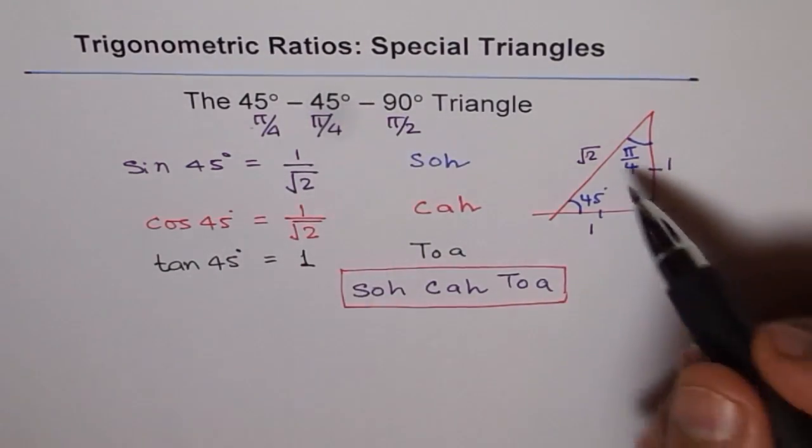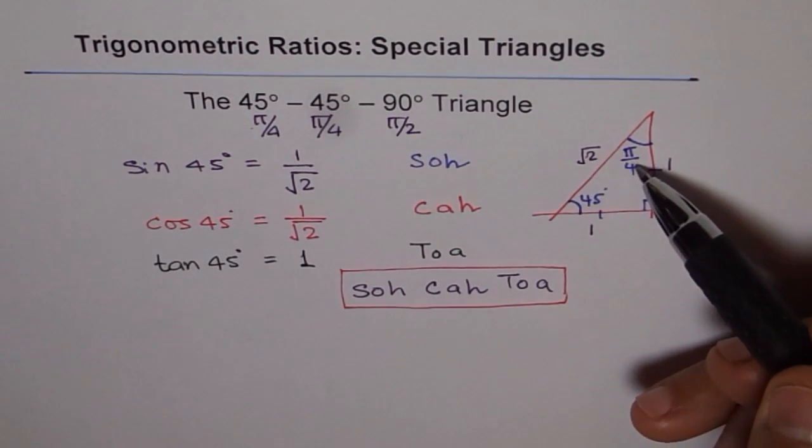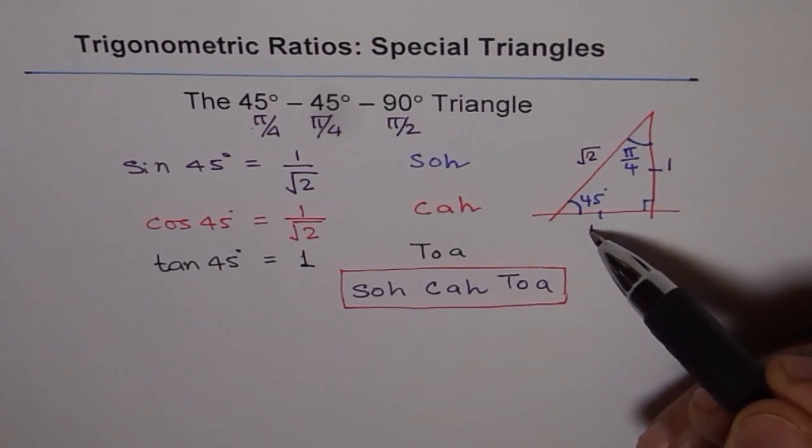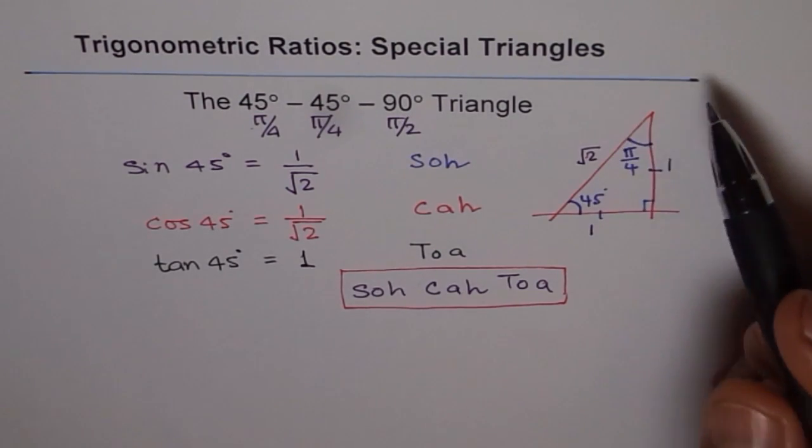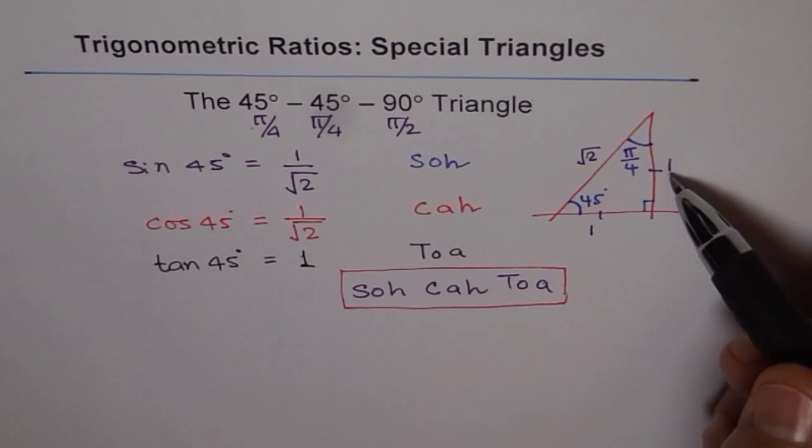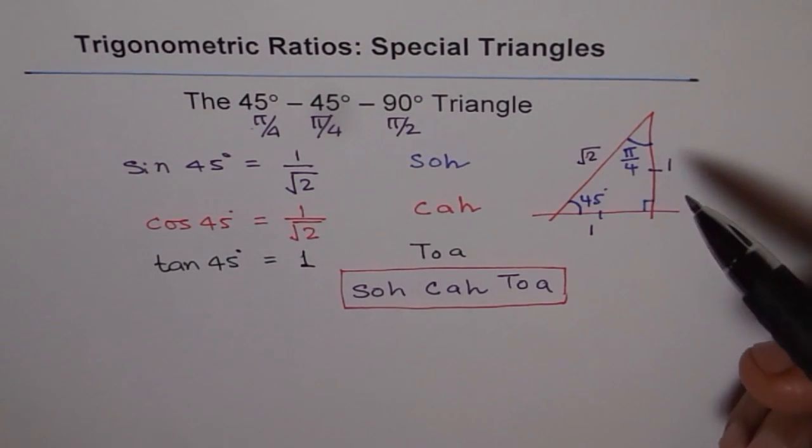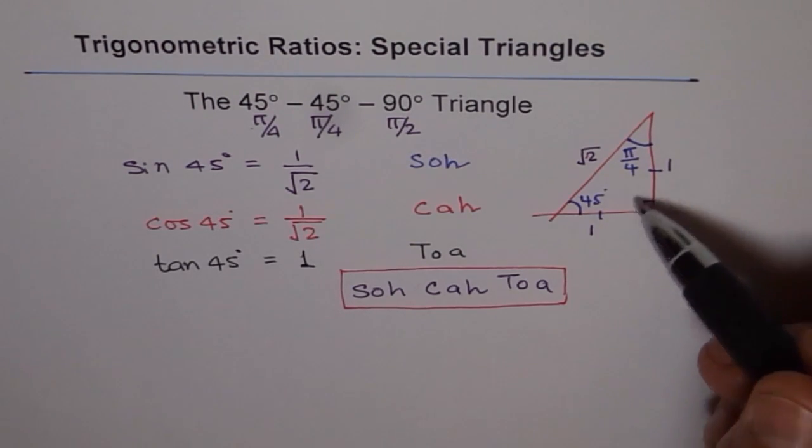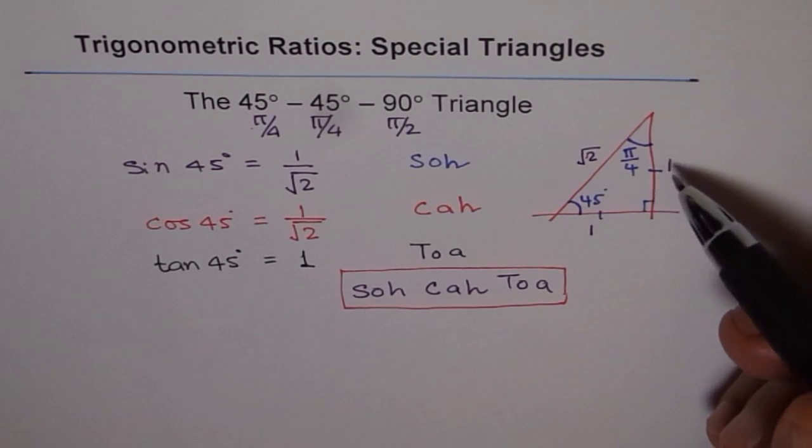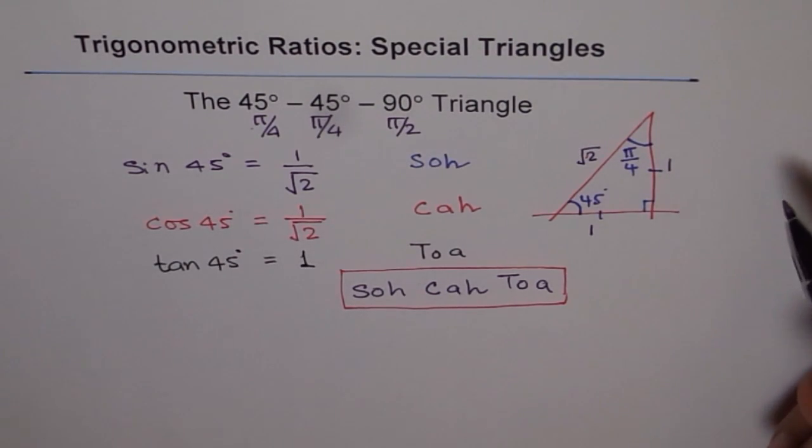As you can see here, sin pi by 4 is opposite over hypotenuse, so 1 over square root 2, which is also equal to cos pi by 4, which is 1 over square root 2. And for this special triangle, tan is 1, since both the legs of your right-angled triangle are equal. So that's how you can remember this special triangle.